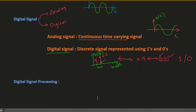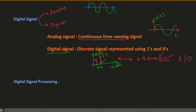We have learned about digital and analog signals and what we mean by signal. Next, we should see what we mean by processing of that signal. Processing is nothing but performing certain operations on these signals. For instance, consider a simple sinusoidal signal that is continuous in nature — that is an analog signal.